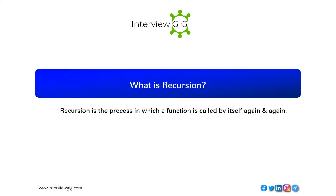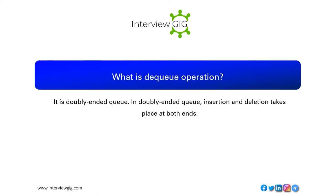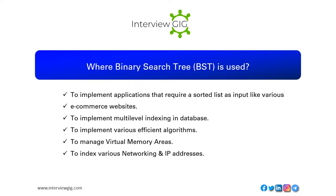What is recursion? Recursion is the process in which a function is called by itself again and again. What is a deque operation? It is a doubly ended queue. In a doubly ended queue, insertion and deletion takes place at both ends.